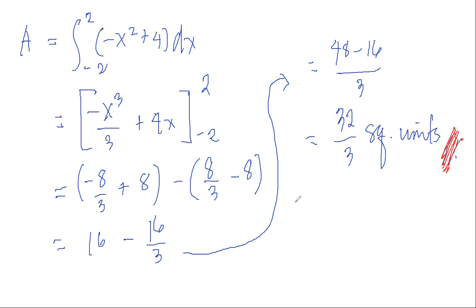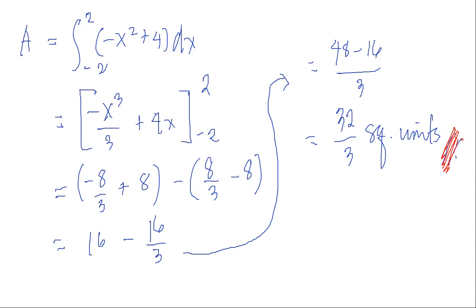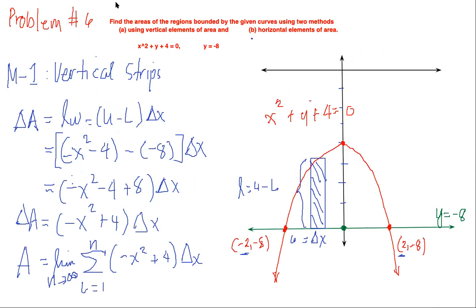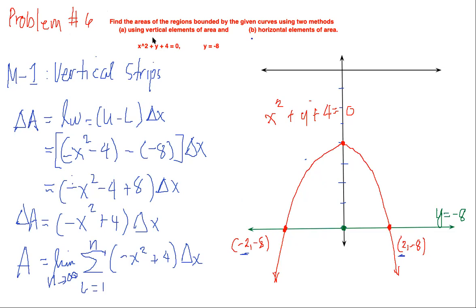Let's verify we get the same answer using horizontal rectangular strips. Now using horizontal rectangular strips, let's identify the parameters. This is our delta y — the width — and x is our length.